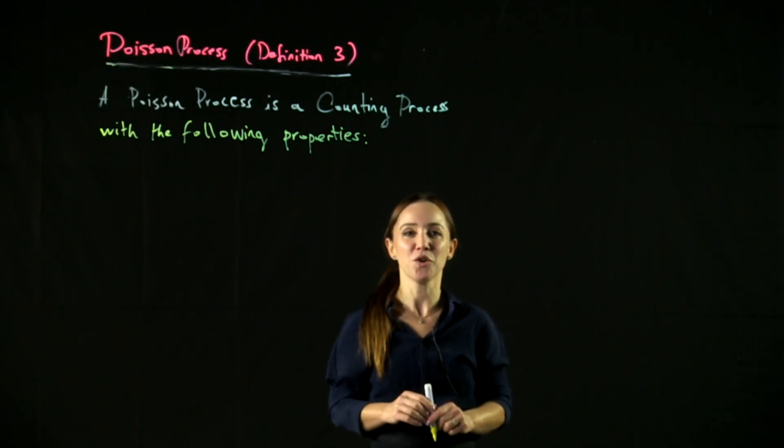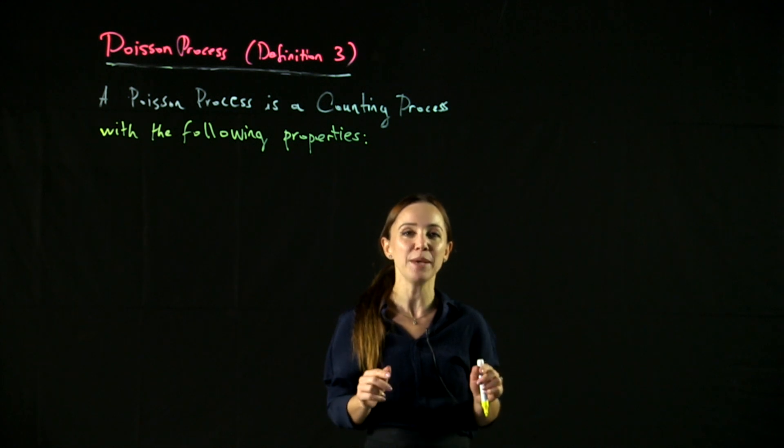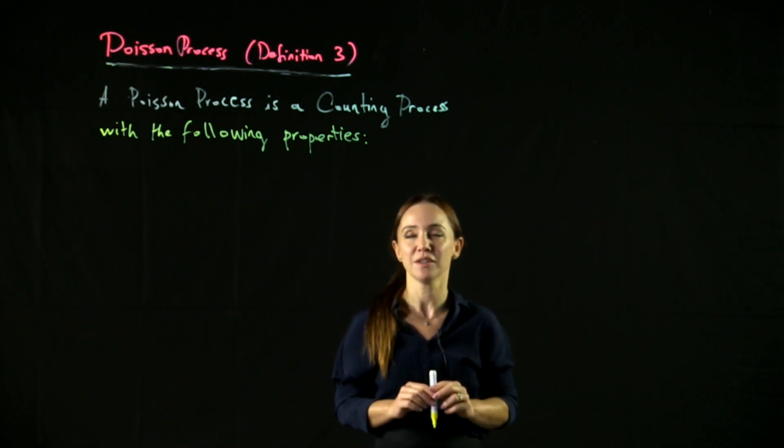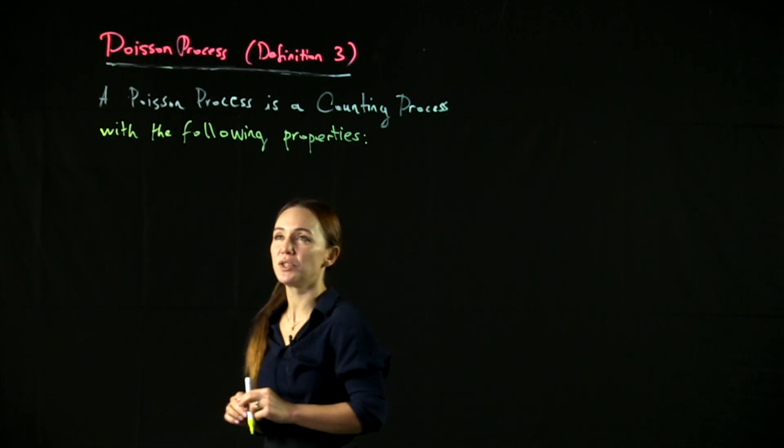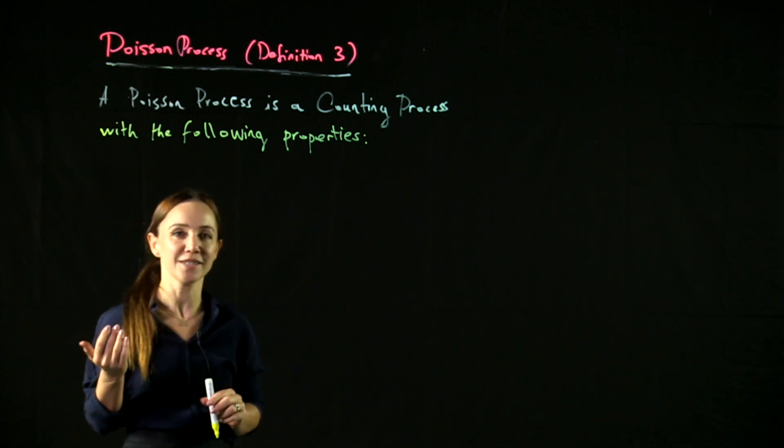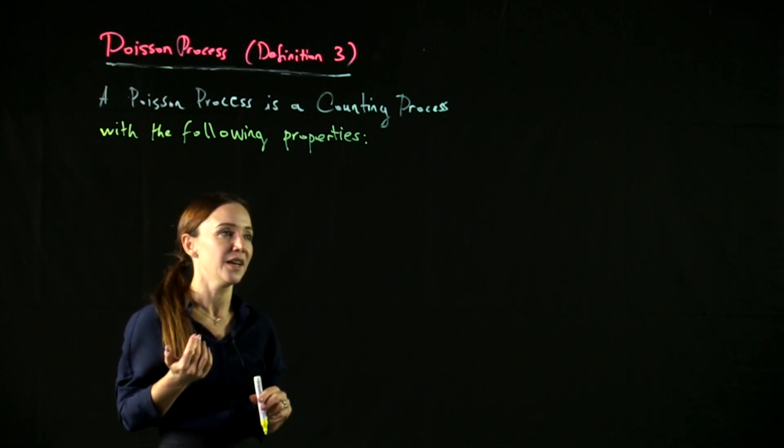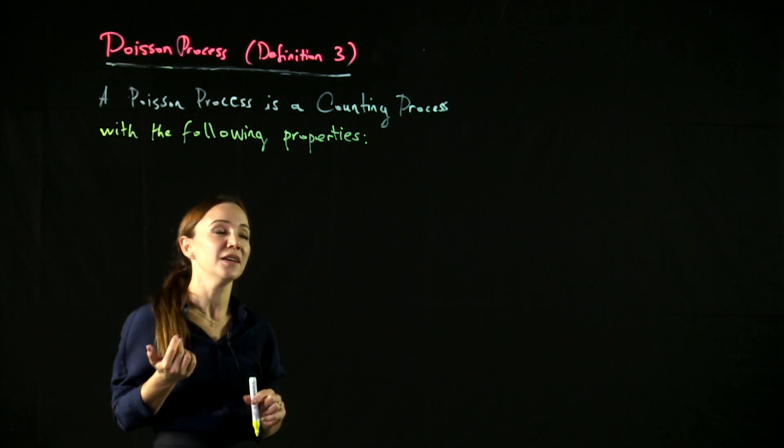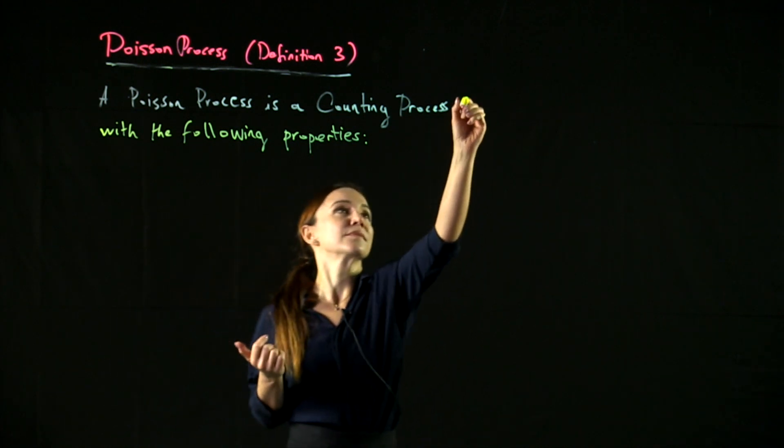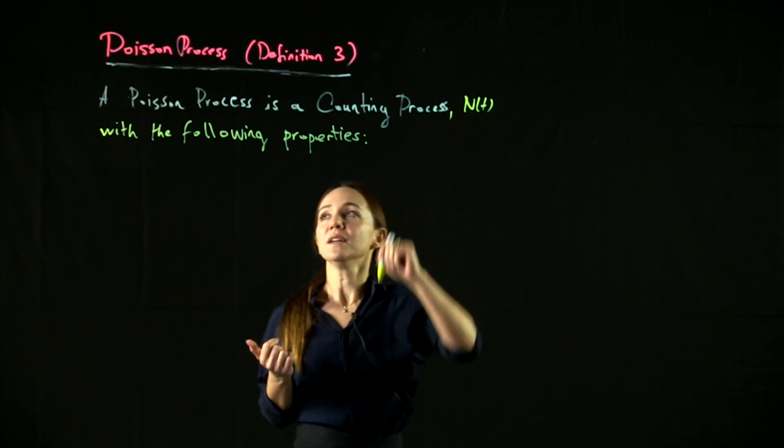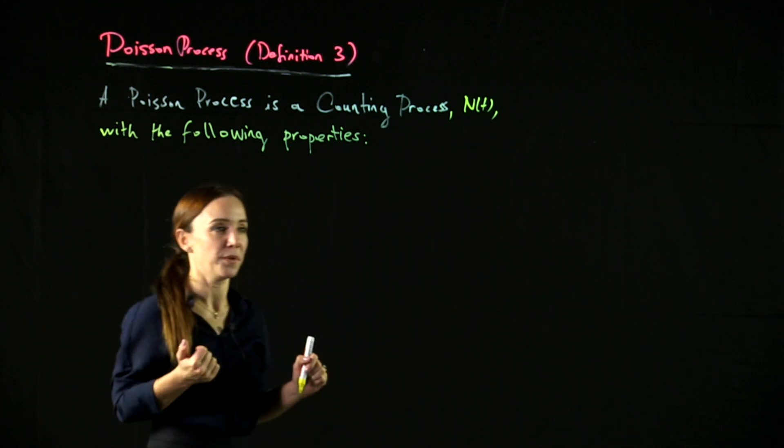A third definition of the Poisson process is sometimes known as the Baby Bernoulli definition of the Poisson process, which is the following. A Poisson process is a counting process, n of t, with the following properties.